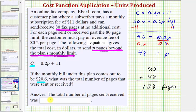So the total number of pages sent and received was 128, because the solution to our equation was p equals 48, which means 48 pages beyond the 80 page limit were sent and received, and because 80 plus 48 equals 128, 128 pages were sent and received in that month. I hope you found this helpful.